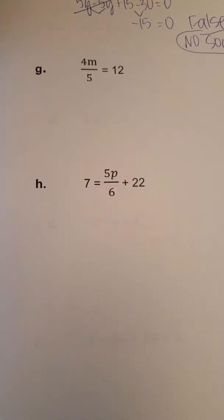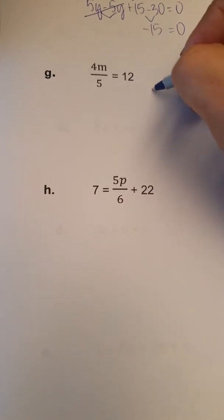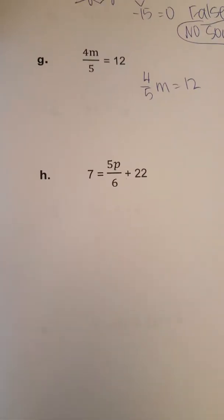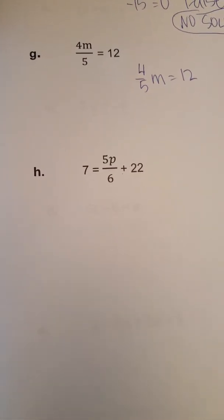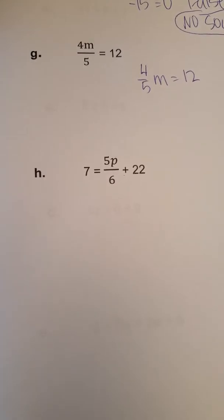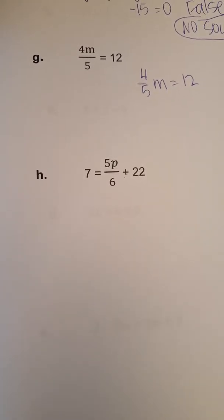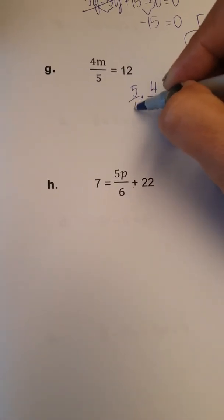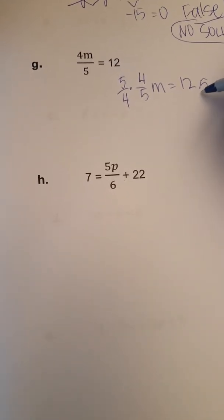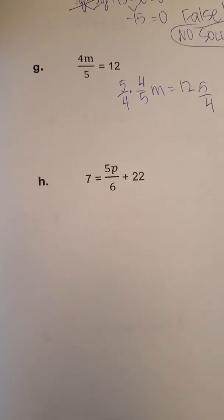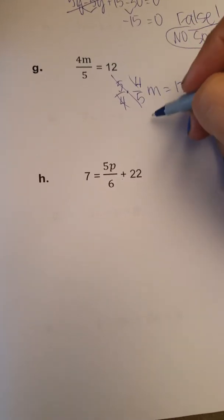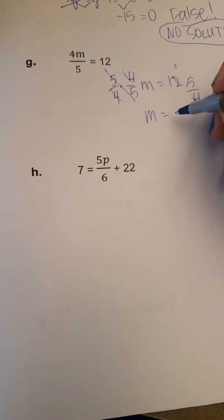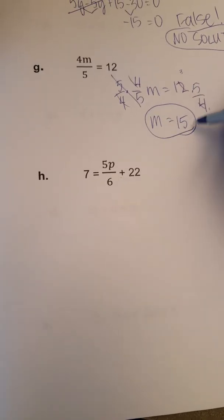In the next example, 4m divided by 5 equals 12, that is the same as 4 fifths m is equal to 12, where I have a fractional coefficient on my variable. To undo the multiplication of m by 4 fifths, I would need to divide both sides by 4 fifths. However, division by 4 fifths is equal to multiplication by 5 fourths. So I multiply both sides of the equation by 5 over 4, which cancels out everything on the left except for the m. And then on the right, 4 goes into 4 once and into 12 three times, so I get m is equal to 15.